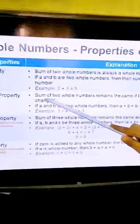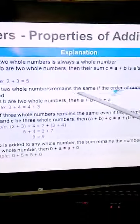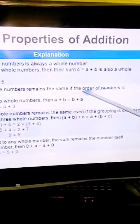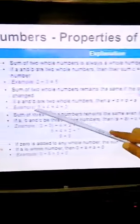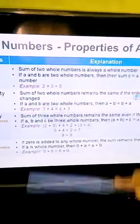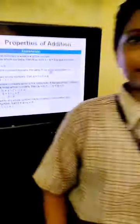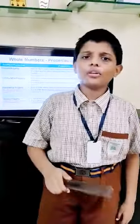Next is commutative property. The sum of two whole numbers remains the same if the order of the numbers is changed. For example, three plus four is equal to seven, and also four plus three is also seven.